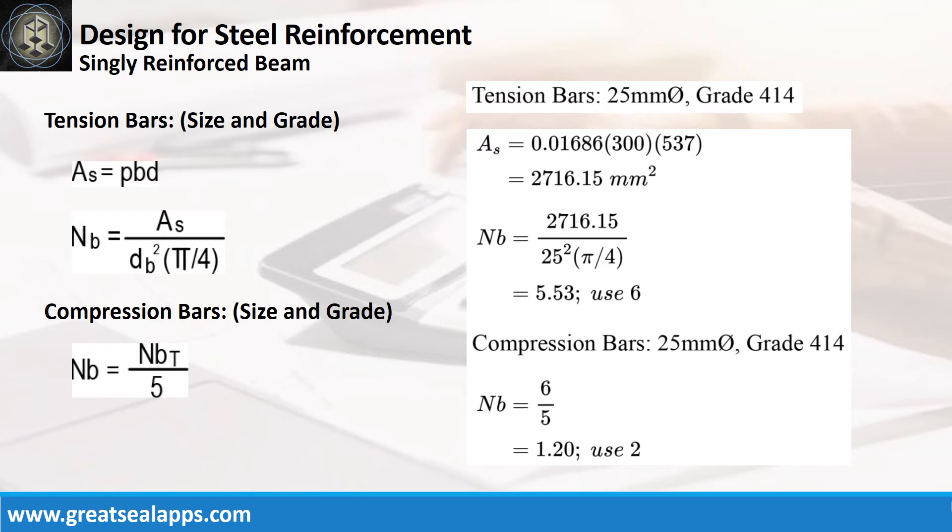Given ρ equals 0.01686, B equals 300 mm, and D equals 537 mm, the area of steel for tension bars is 2,716.15 square millimeters, and the number of bars for 25 mm bar is 6. The number of compression bars is 2.